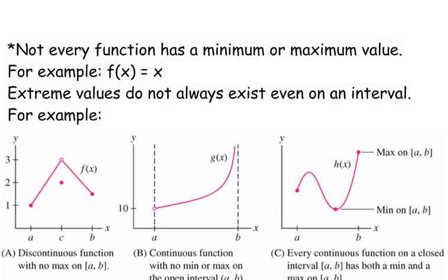There is no maximum value on this interval. Because what is the maximum value? That may be where it occurs, but what is the maximum value? It doesn't work. Now this does have a minimum value — it has a minimum value at a of one, the value of one.